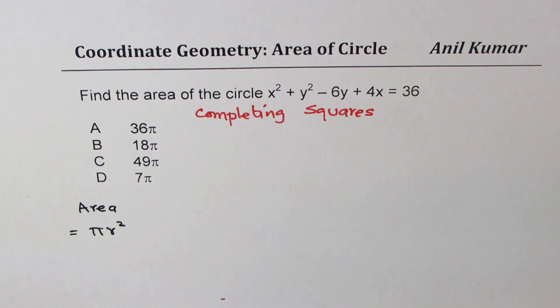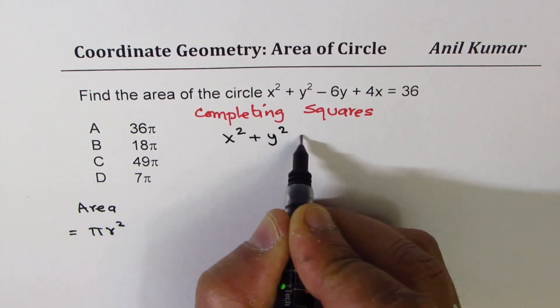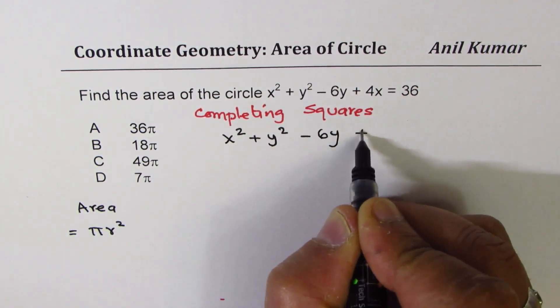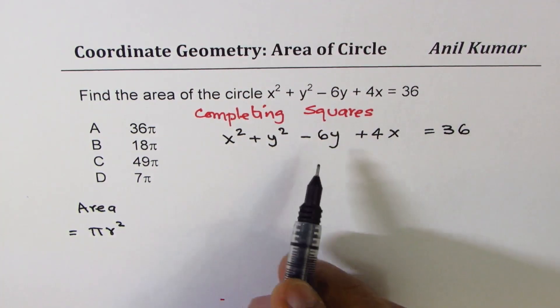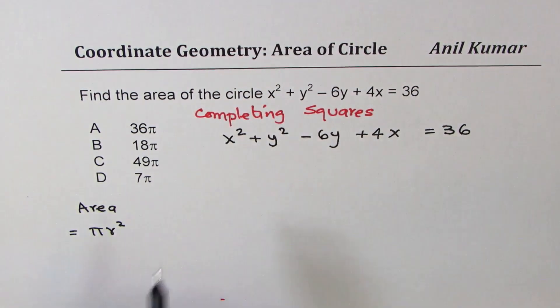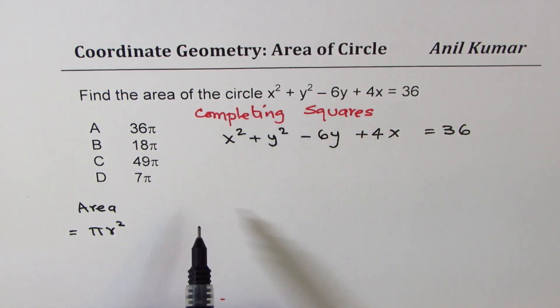Let us see how to do it. x² + y² - 6y + 4x = 36. We need to find radius of the circle. So let us find the center where the circle has been translated to.